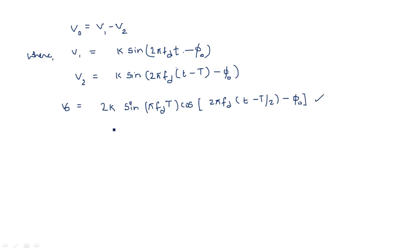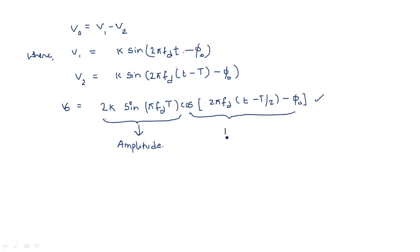Looking at the output expression V0 = 2K·sin(π·FD·T)·cos(...), the term 2K·sin(π·FD·T) decides the amplitude of the output signal, while the cosine term represents the phase. When this amplitude component becomes zero — when sin(π·FD·T) = 0 — the output of the MTI radar becomes zero.